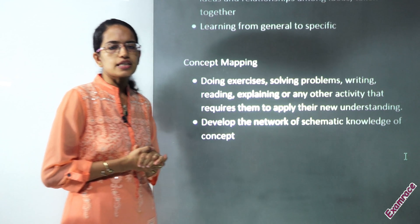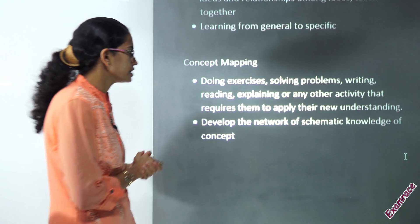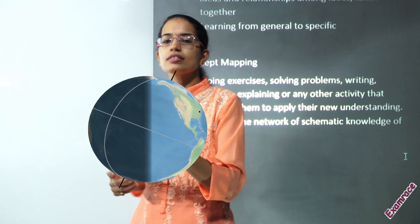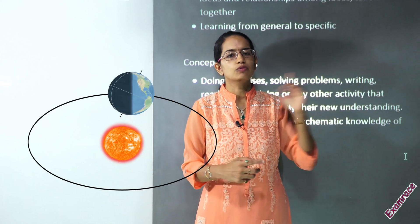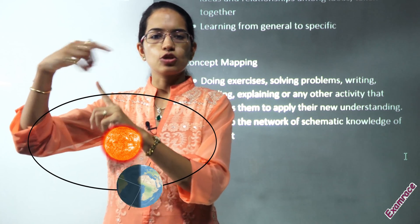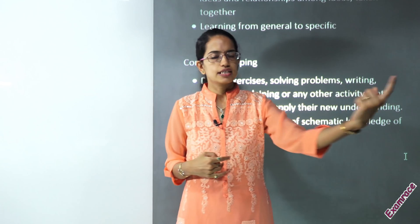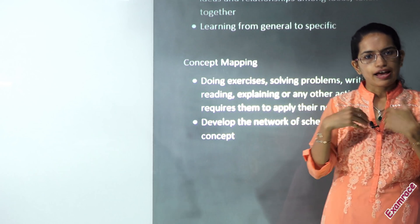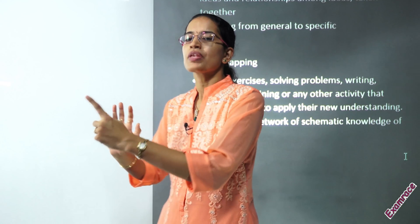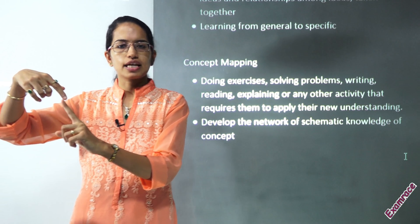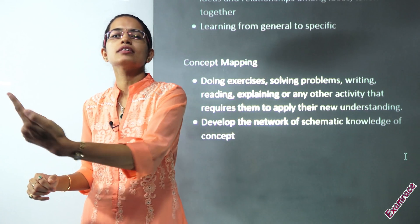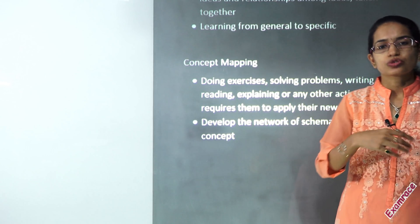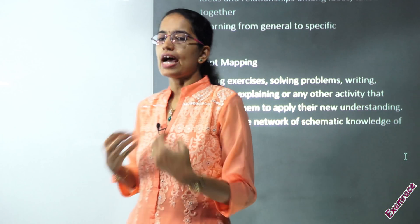The last strategy under teaching concepts is concept mapping. For example, I have two concepts: earth moves on its axis and earth revolves around the sun — one is the internal axis (rotation) and the other is the external axis (revolution around the sun). A student can create a model showing earth spinning on its internal axis as rotation, and earth moving around the sun as revolution. This can be done through models, examples, quizzes, or any other method — that is concept mapping.